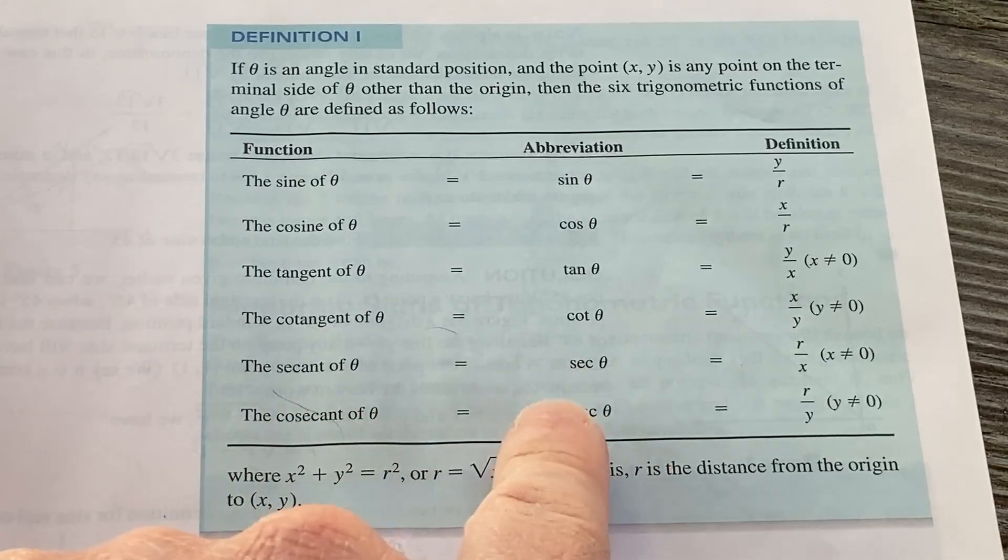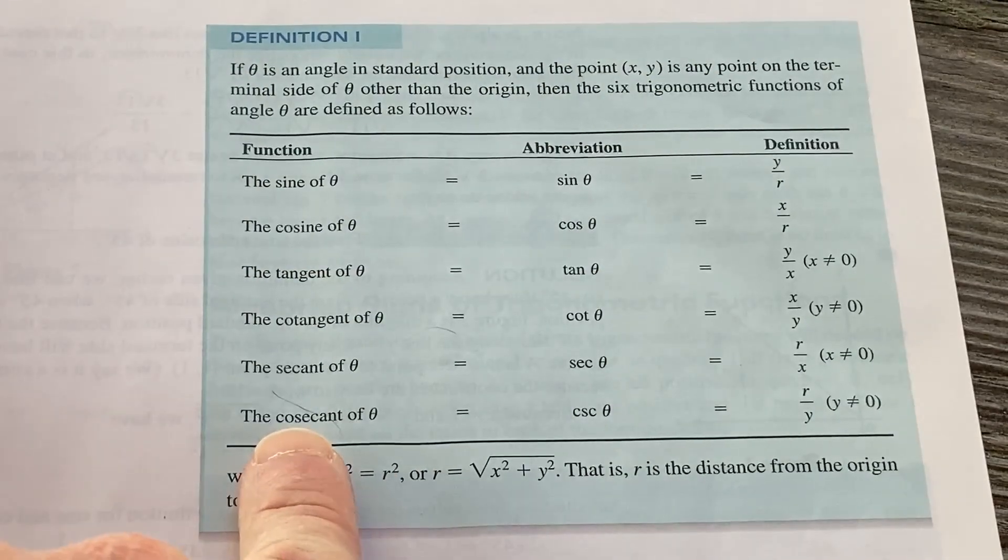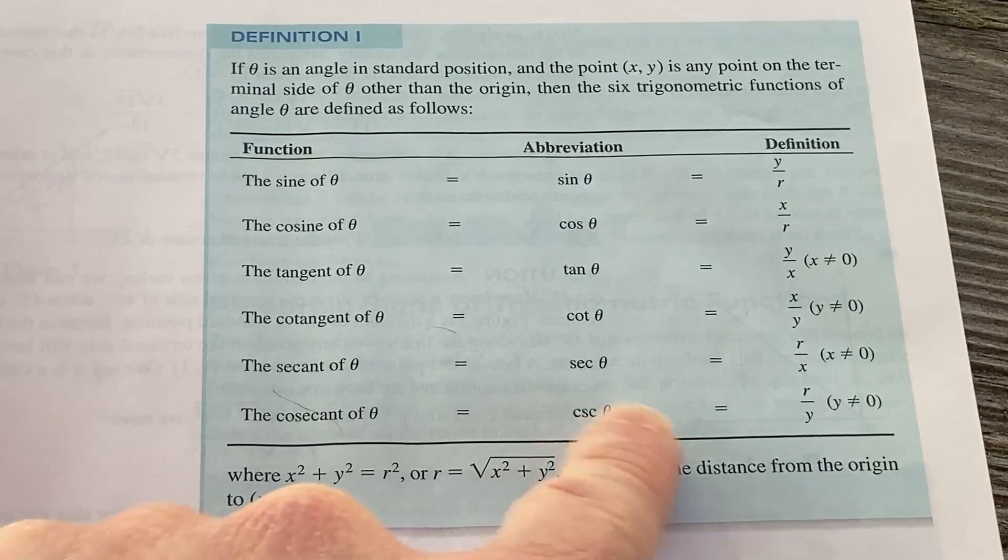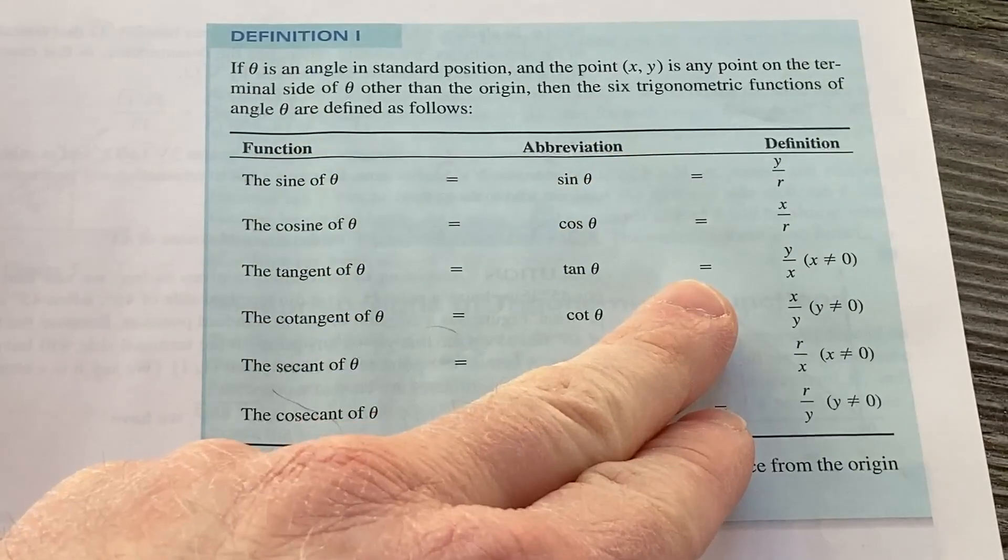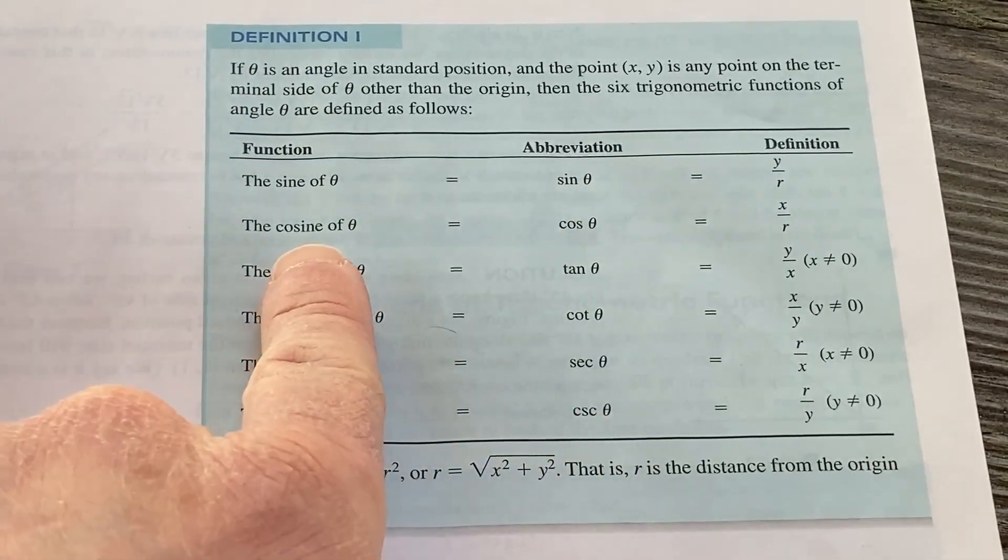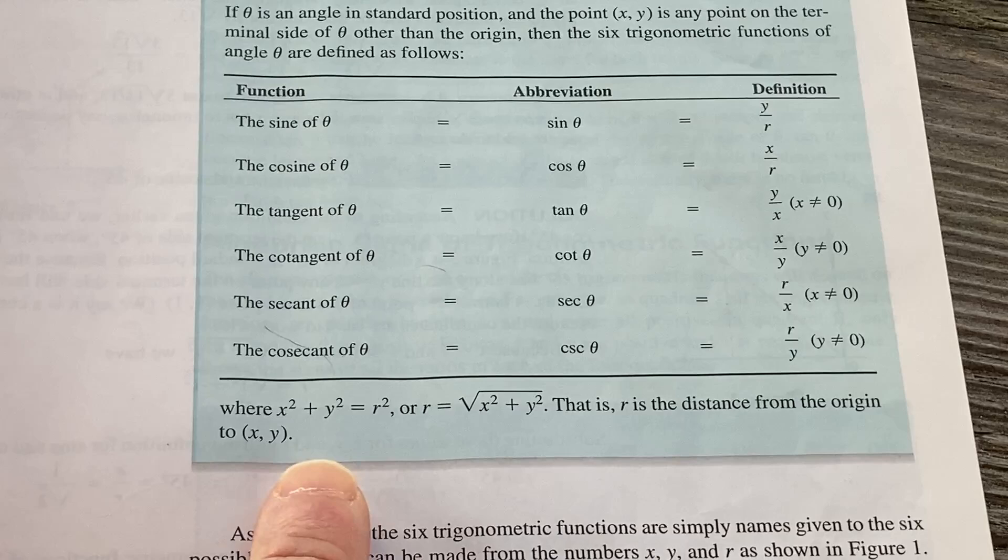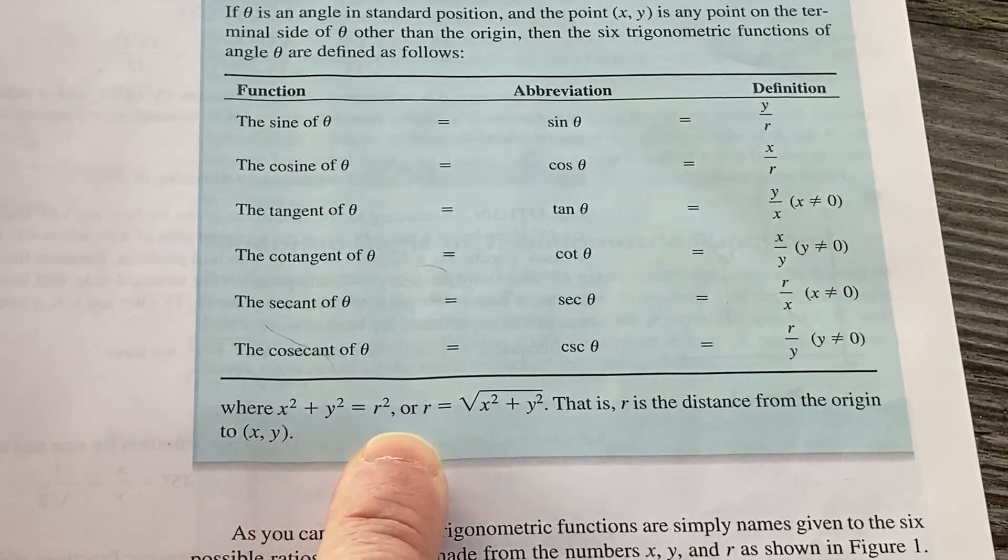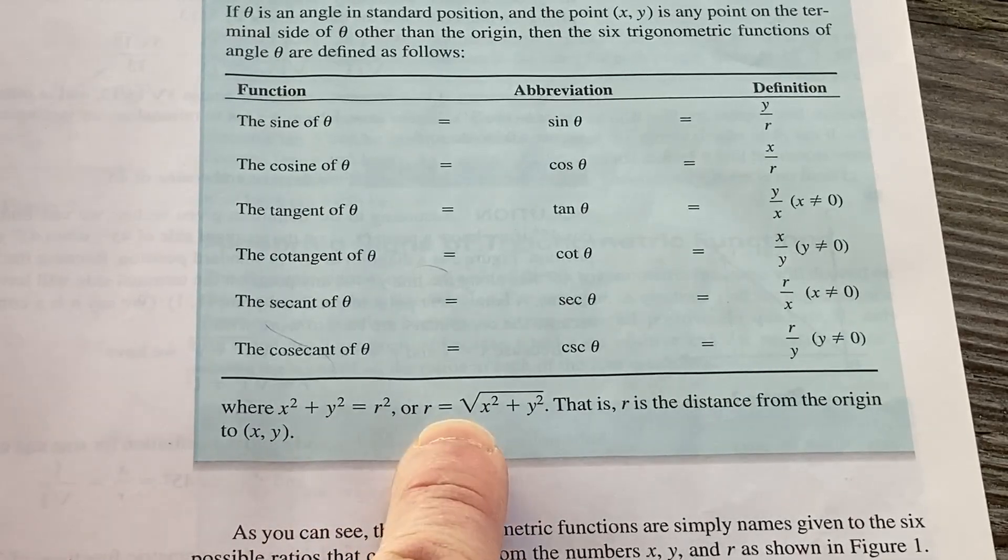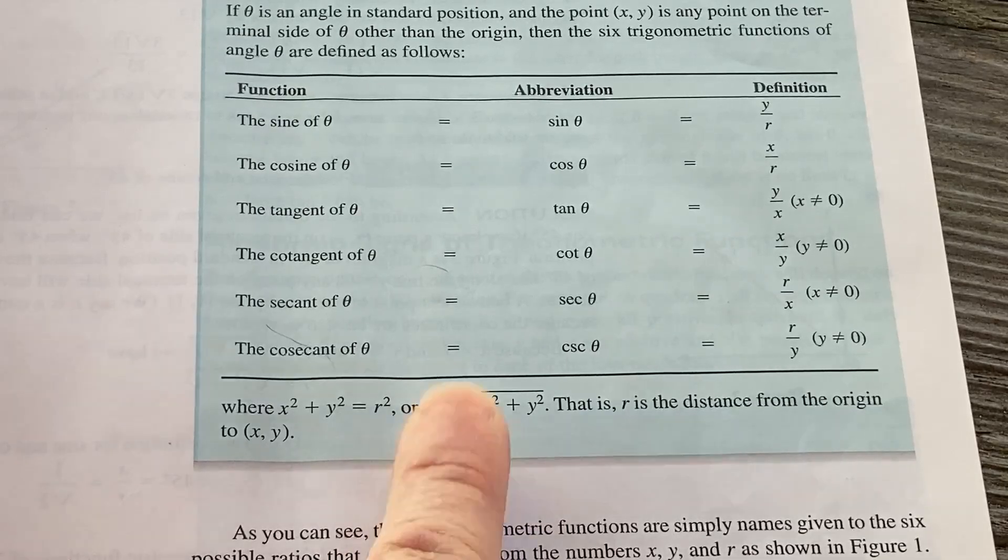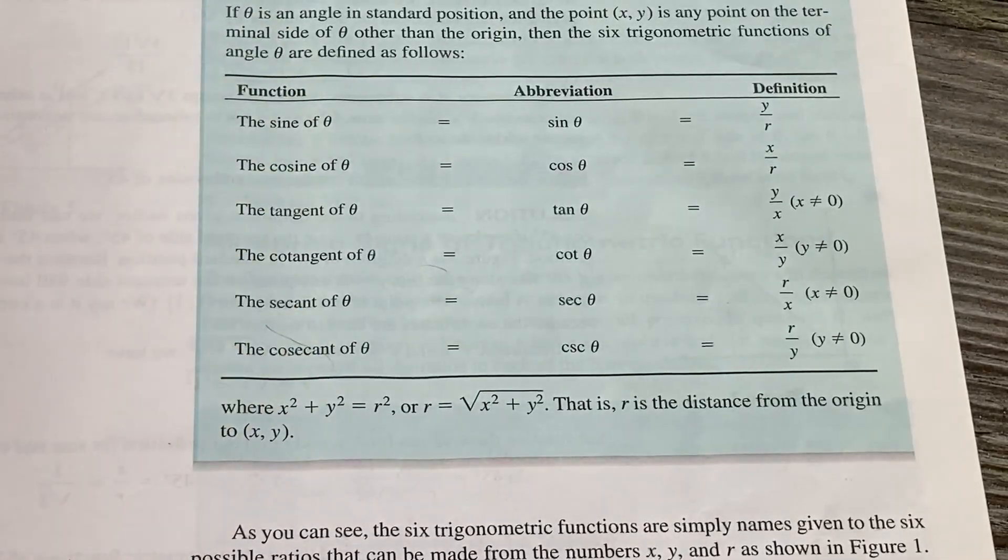The secant of theta is the reciprocal of cosine, so it's r over x, assuming x is not zero, otherwise it's not defined. And then the cosecant of theta, that's the reciprocal of the sine, is going to be r over y, and that's only valid when y is not zero. So if sine is zero, you can't compute the cosecant. Likewise, if the cosine of theta is equal to zero, you can't compute the secant, because it's the reciprocal. And then here it tells you where x squared plus y squared equals r squared. This comes from the Pythagorean theorem. And then taking the square root of both sides, you get r equals plus or minus the square root of x squared plus y squared, but r is a distance, so you throw away the minus. And that's why the minus is missing here in the book.